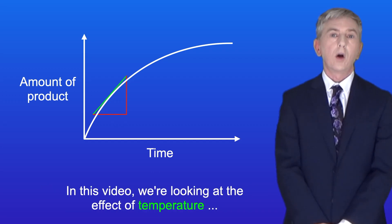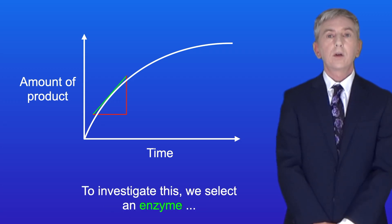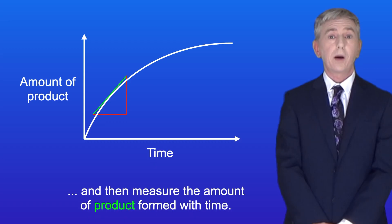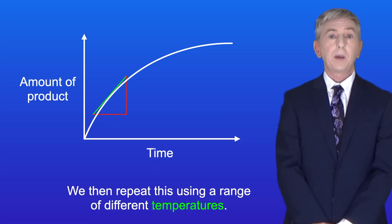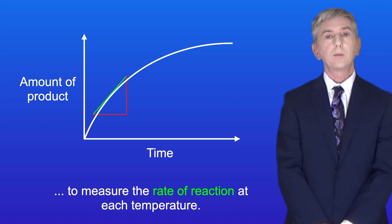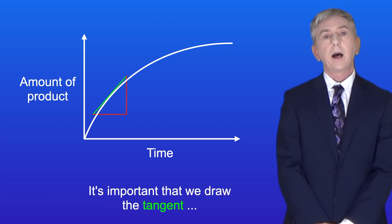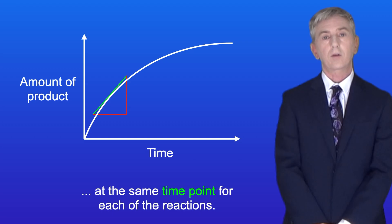In this video we're looking at the effect of temperature on the rate of an enzyme controlled reaction. To investigate this we select an enzyme and then measure the amount of product formed with time. We then repeat this using a range of different temperatures, draw tangents to measure the rate of reaction at each temperature, and it's important that we draw the tangent at the same time point for each of the reactions.